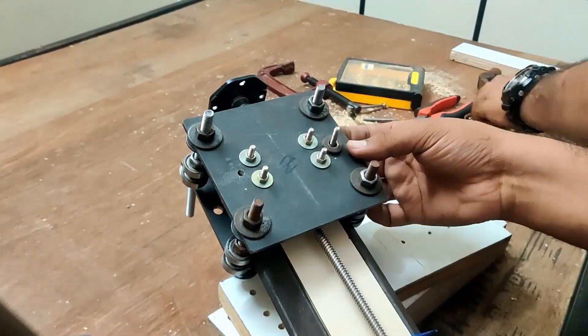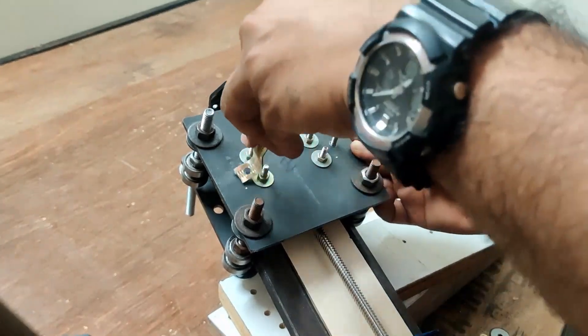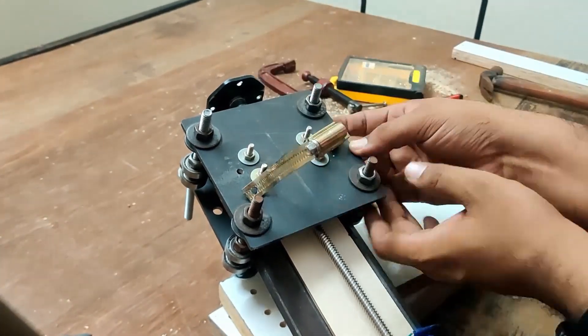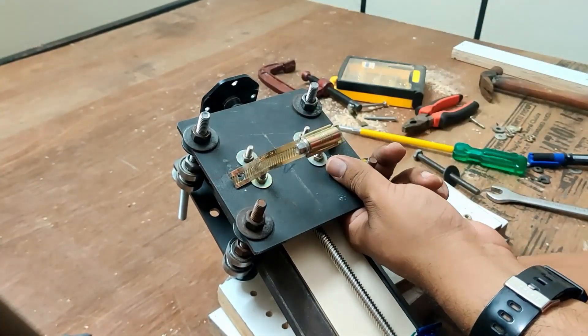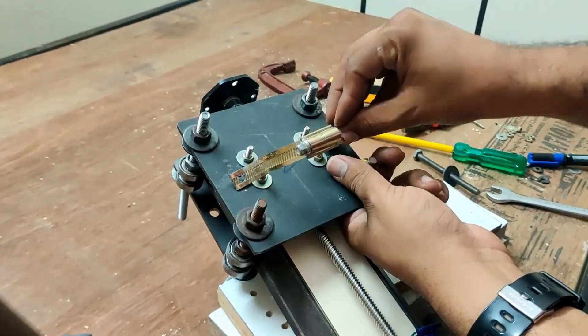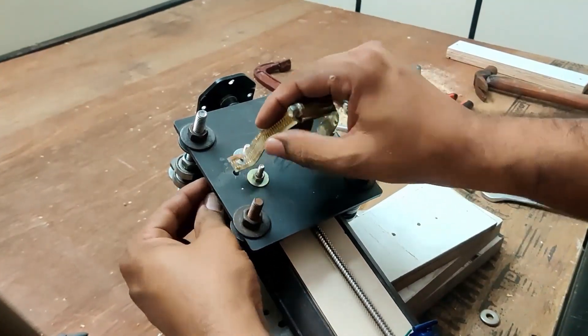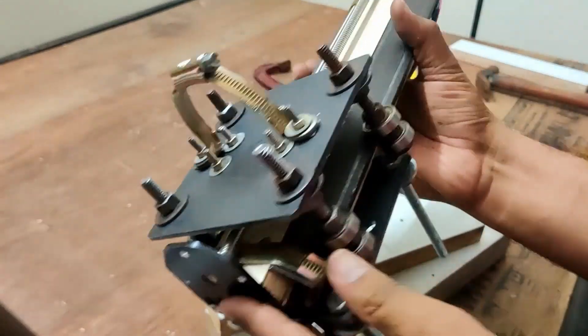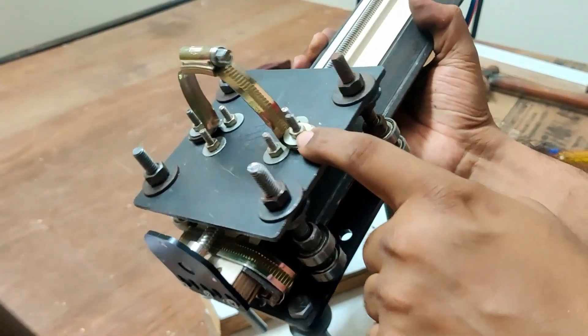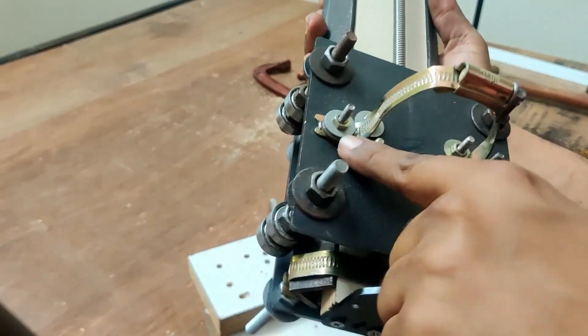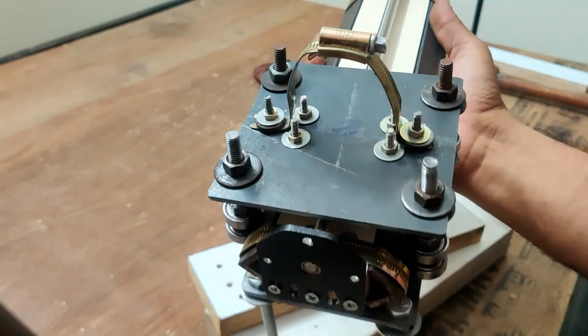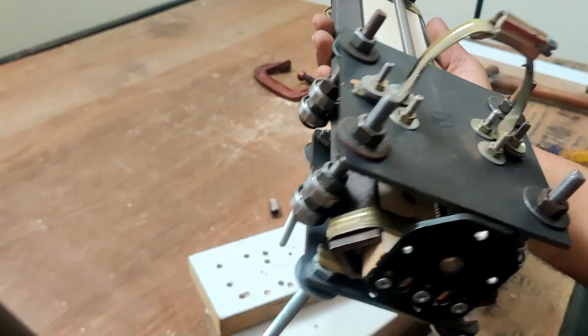Next step is to add the spindle mount which is made from a belt clamp. I just cut it in half and turned it into a U shape. I'm using 1 inch bolts and there you go, it's done. I've used washers to hold the clamp in place and that's it.